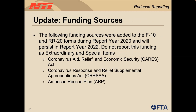We'll now review the funding sources added to the RR20 form during report year 2020. These funding sources include the Coronavirus Aid, Relief, and Economic Security Act or CARES, the Coronavirus Response and Relief Supplemental Appropriations Act or CRRSA, and the American Rescue Plan or ARP. These funds should not be reported as extraordinary and special items, but reported by their source in the RR20 form. There is a specific line item for each of the mentioned funds, and that is where they should be reported.